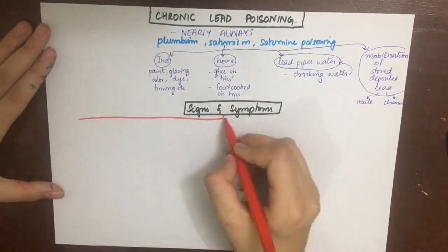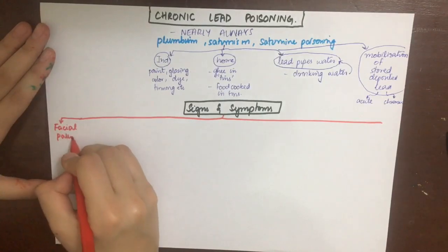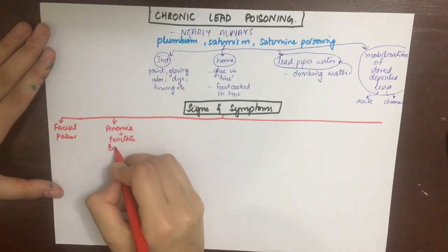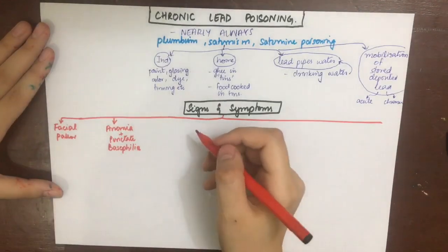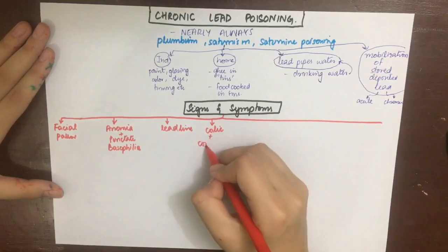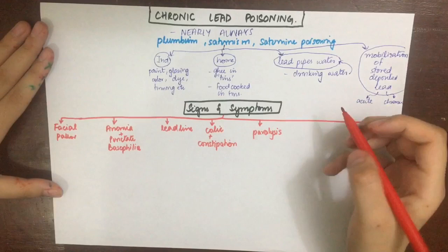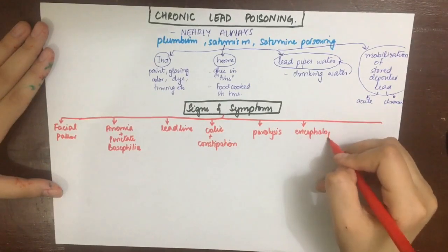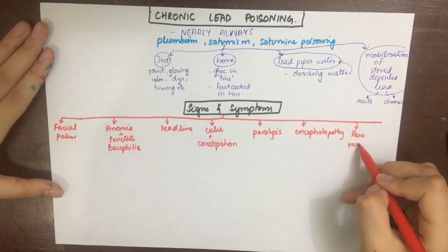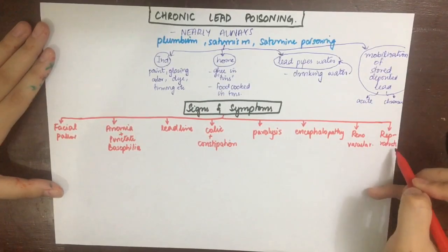The exposure to lead is chronic but the symptoms can be acute. There will be pale face, anemia with punctate basophilia, lead line, colic and constipation, paralysis, encephalopathy, renovascular manifestations, reproductive system manifestations, and some general symptoms.